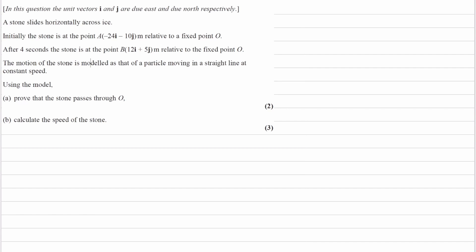The question states that unit vectors i and j are due east and north respectively. We're given two position vectors that a stone slides between, and that takes four seconds.